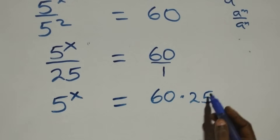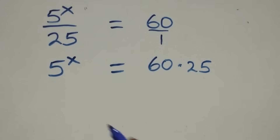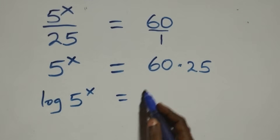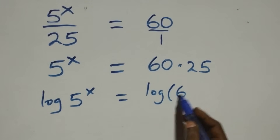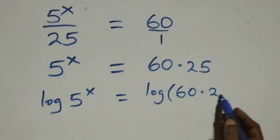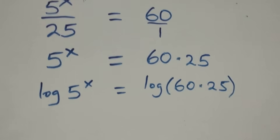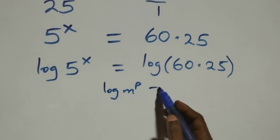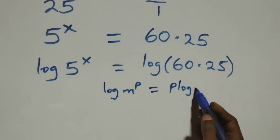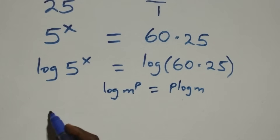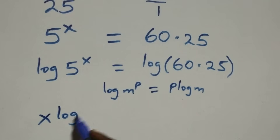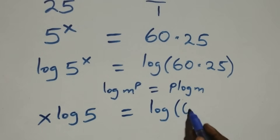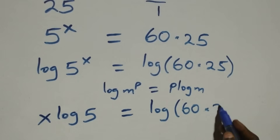The next step: we take the log on both sides. We have log of 5 raised to power x equals log of 60 times 25. We apply the power rule of logarithms — log m raised to power p is the same as p log m — so this becomes x log 5 equals log of 60 times 25.